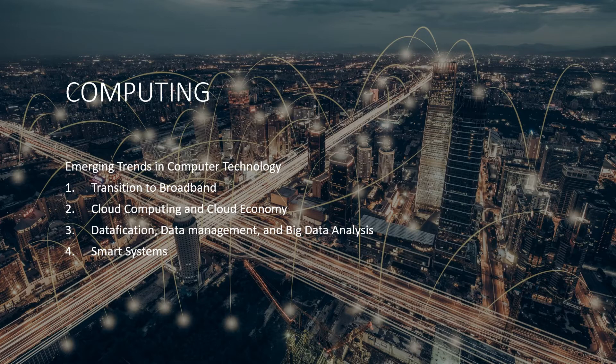The fourth emerging trend in computer technology is smart systems. A smart system uses a feedback loop of data which provides information for sound decision making. This system monitors, measures, analyzes, communicates, and acts based on the information captured by sensors. The four principles of smart infrastructures are data, analysis, feedback, and adaptability. A smart system has to be adaptable to varying demands and conditions, including future developments in technology.